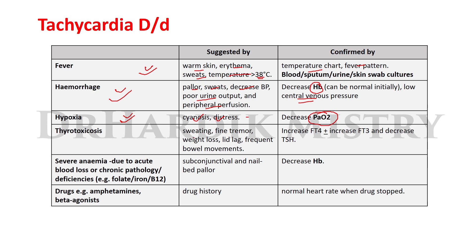When tachycardia occurs with sweating, fine tremor, weight loss, leg weakness, and frequent bowel movements, along with an increase in free T4 and free T3 levels and a decrease in thyroid stimulating hormone (TSH) level, then we can say that the tachycardia is due to thyrotoxicosis.